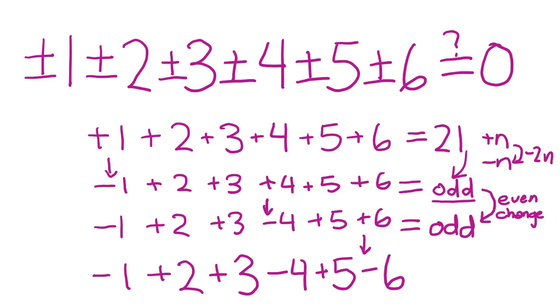Thus, at the end of the process, the value of the final expression must be odd, and therefore can't be 0. This logic works for whatever expression we want to make, so that completes the problem.